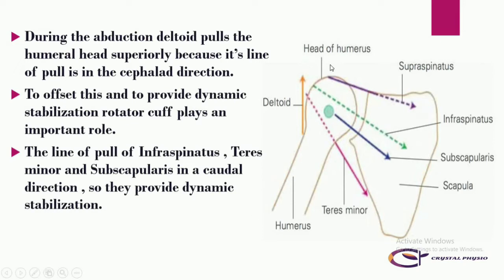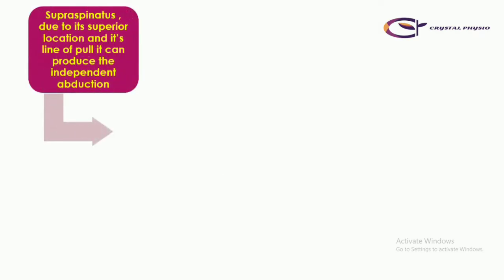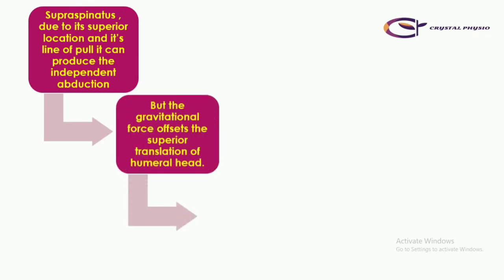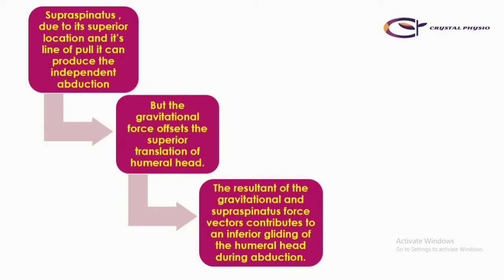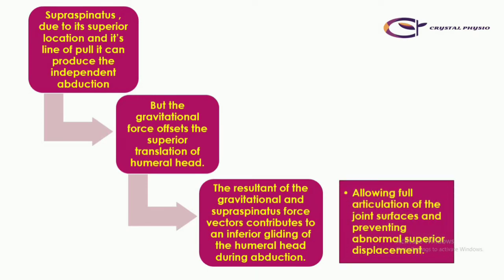As you can see in this image, the deltoid pulls the humeral head in the superior direction because its line of pull is superior. But the rotator cuff tendons — infraspinatus, subscapularis, and teres minor — have their line of pull in the inferior direction. The supraspinatus, due to its superior location, can produce independent abduction. However, gravitational force offsets the superior translation of the humeral head, and the resultant of gravitational and supraspinatus forces contributes to inferior gliding of the humeral head during abduction, allowing full articulation and preventing abnormal superior displacement.